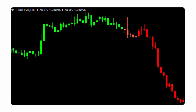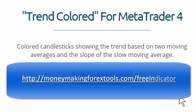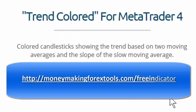Essentially, the uptrend is colored green and the downtrend is colored red, and that's based on two moving averages and the slope of the slowest moving average. Pretty handy indicator, and it's free.